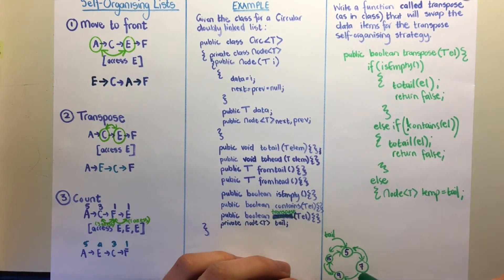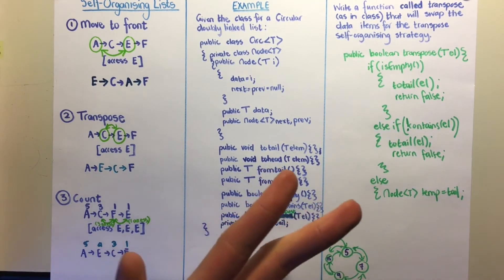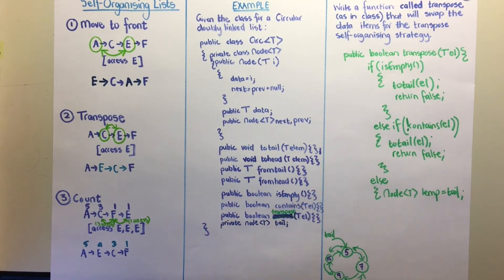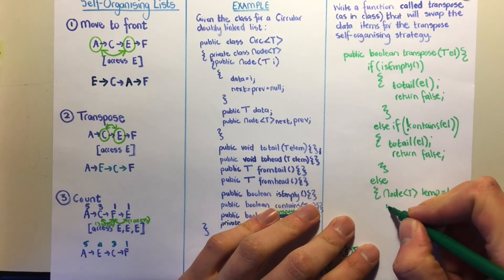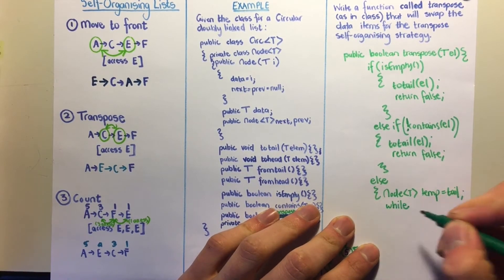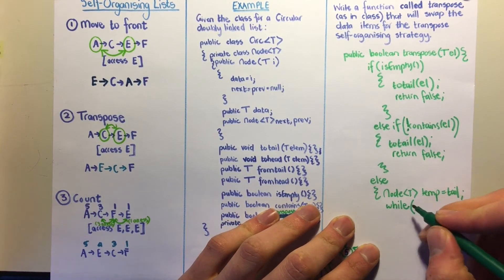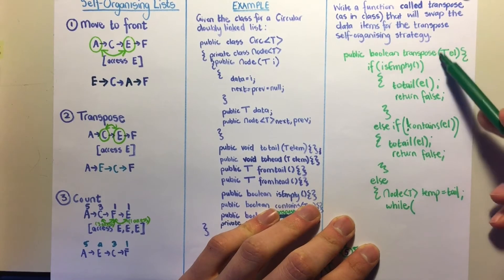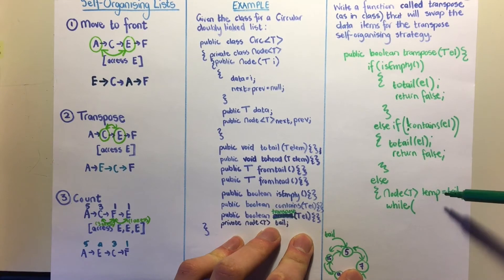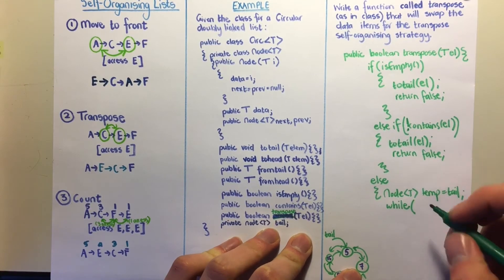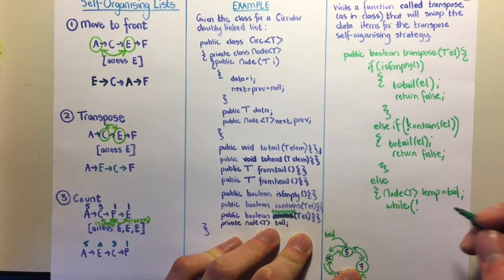To swap the element with its predecessor, we need to find both the element and the node before it. We set up a while loop checking if temp.next.data is not equal to el. Using temp.next lets us keep temp as the predecessor pointer during traversal.